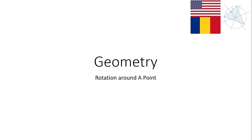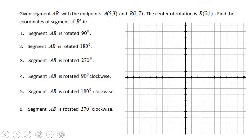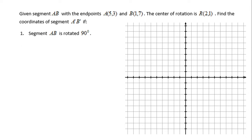Here you can see the problem: we have segment AB given by point A with coordinates (5, 3) and point B with coordinates (1, 7), and we're going to rotate around the rotation point R at (2, 1). We have six problems — let's see how that works.